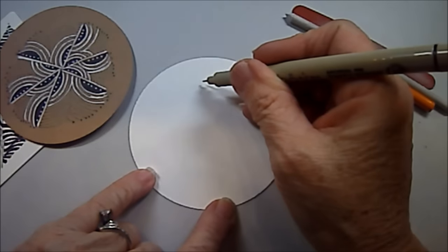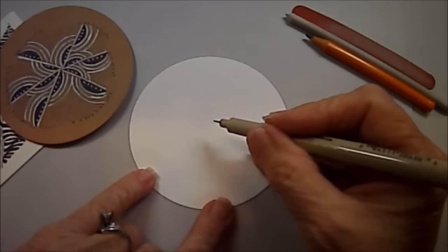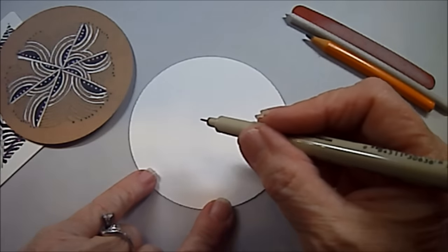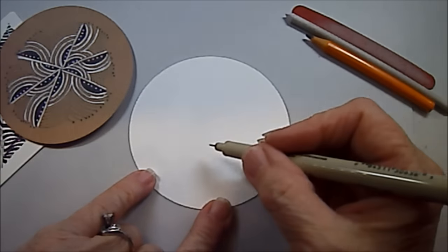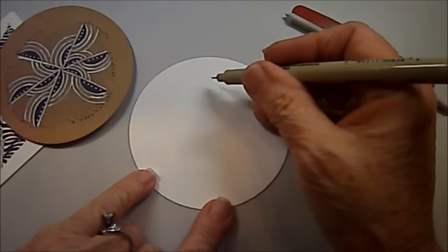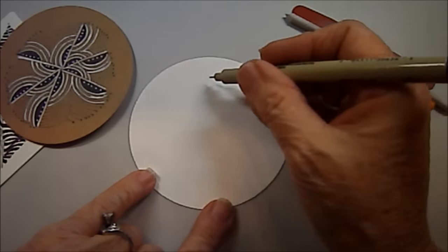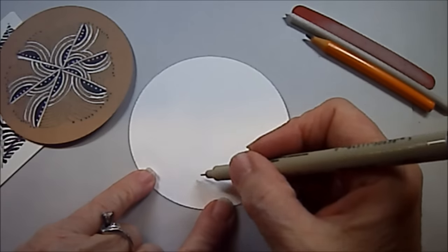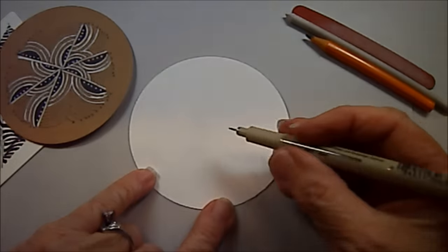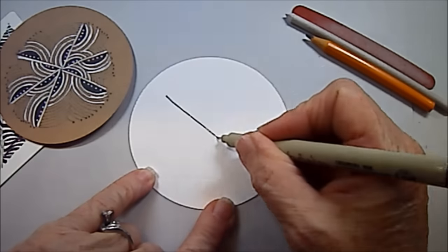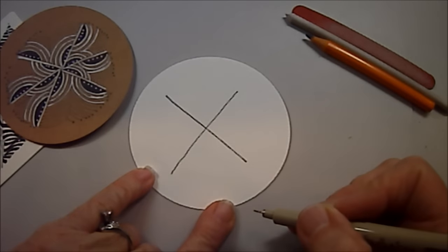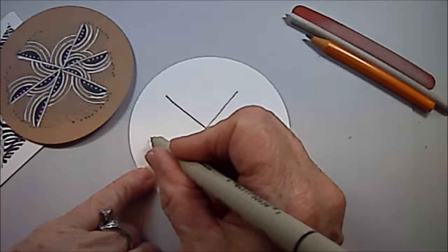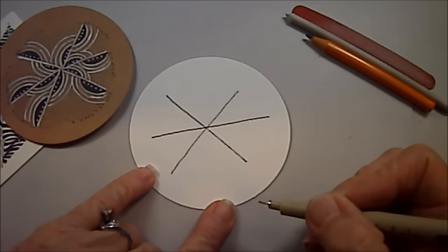So we're just going to start out, and we're going to talk about making something that has six sections or eight. If I make eight sections, I can divide it equally with a cross, and then in between that. But if I want six, I make an X like this to begin with, and then I divide it down the center.